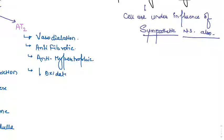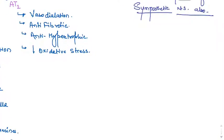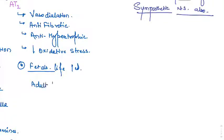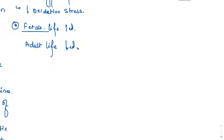At angiotensin 2 receptors, we see vasodilation, anti-fibrotic and anti-hypertrophic effects, and decreased oxidative stress. An important point: angiotensin 2 receptors are highly upregulated in fetal life but downregulated in adult life. Therefore, in adults, angiotensin 2 acts mainly through angiotensin 1 receptors. Angiotensin 2 receptors are only re-expressed in cardiac or hypertensive disease.